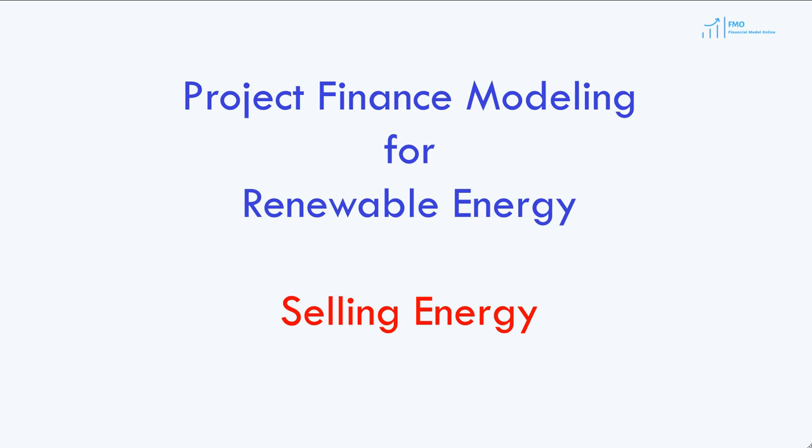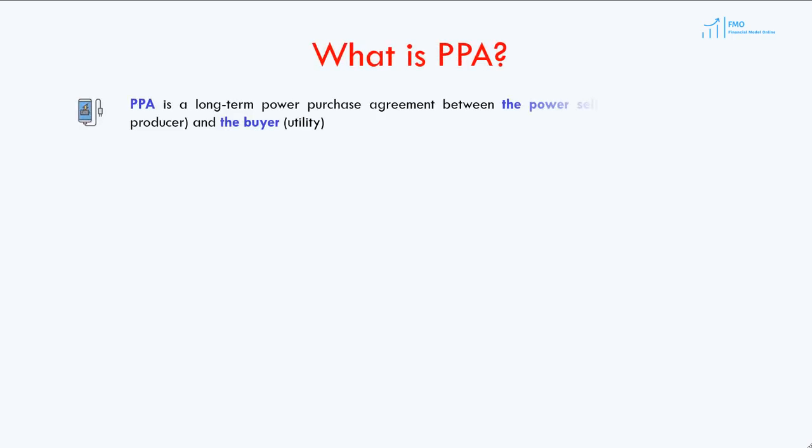Welcome to the Project Finance Modeling for Renewable Energy course. In today's lesson, we will discuss how renewable projects sell energy under power purchase agreements. A Power Purchase Agreement, or PPA, is a long-term contract between the energy seller, which is typically an independent power producer, and the buyer, called an off-taker, which can be a private or public utility.